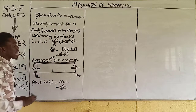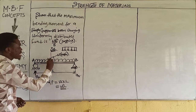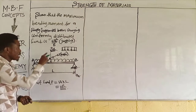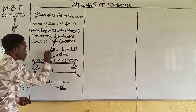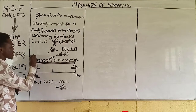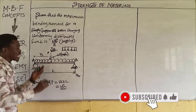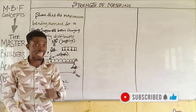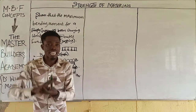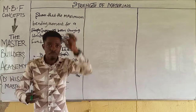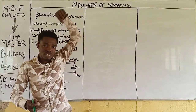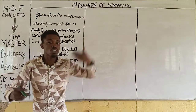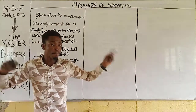This point load WL is now acting at the center of the beam — at a distance of L/2 from the left and L/2 from the right. Any time you convert a UDL to a point load, the point load must act at the center of that span, maintaining equal distance from both supports.